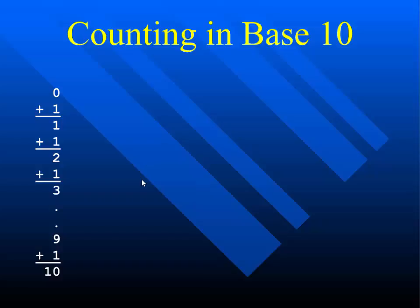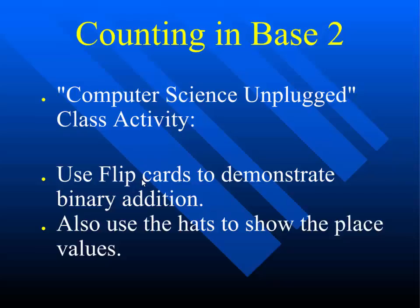Now we apply counting to base 2. It's like base 10, but you're constantly carrying that digit because you only have two digits, 0 and 1. The place values are: first column is 1, second is 2, third is 4, fourth is 8, fifth is 16 — then 32, 64, 128, 256, 512, 1,024. See how many digits it takes? In binary, 1,024 is written as ten 1's followed by zeros — it takes a lot more digits to represent a number in base 2 than in base 10.